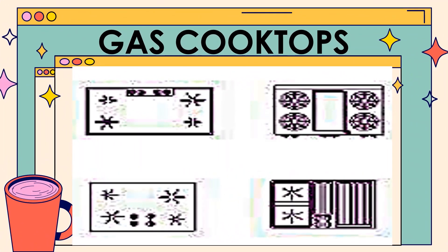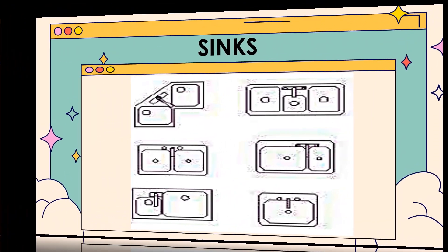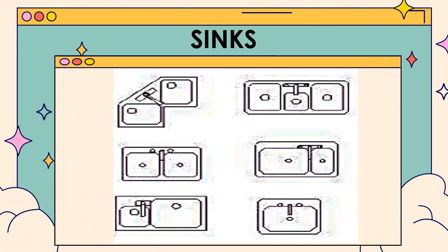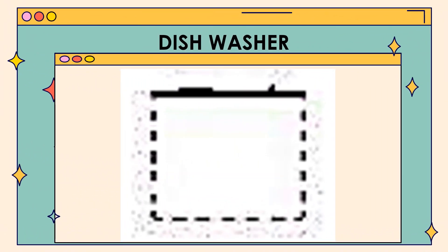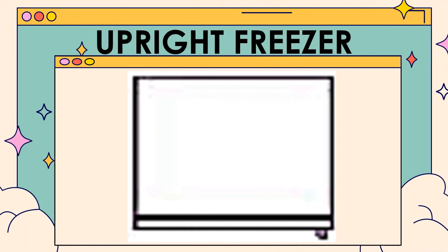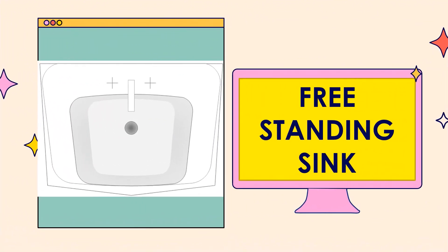This is the kitchen floor plan symbol of gas cooktops. This is the kitchen floor plan symbol of sinks. This is the kitchen floor plan symbol of dishwasher. This is the kitchen floor plan symbol of upright freezer. This is the kitchen floor plan symbol of freestanding sink.